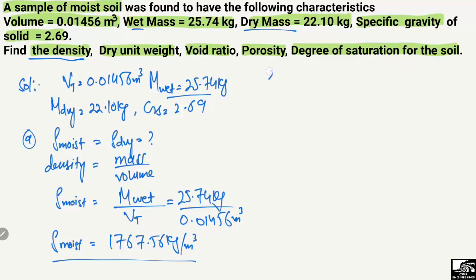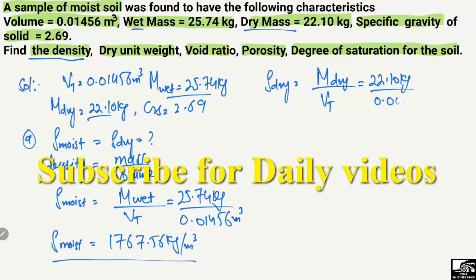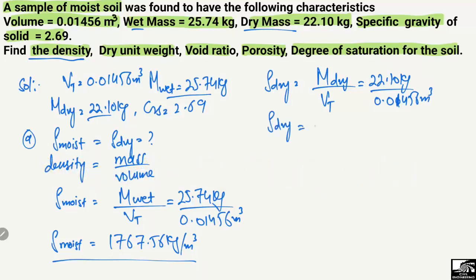Now to find out the dry density, using the same formula: dry density equals dry mass divided by total volume. The dry mass is 22.10 kilograms divided by the total volume 0.01456 cubic meters. So we get the dry density of the soil sample as 1517.86 kilograms per cubic meter.